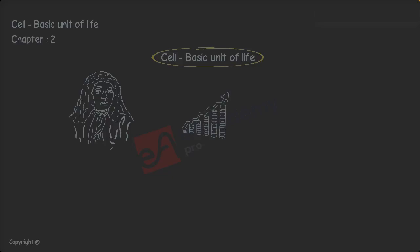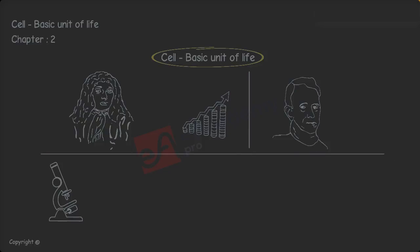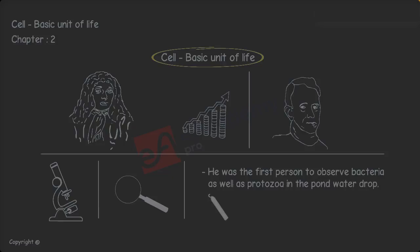He was a Dutch businessman and a contemporary of Hooke. He also used microscopes and was a physicist. He made fine quality lens for the use of monocular microscope and was the first person to observe bacteria as well as protozoa in the pond water drop. Some of the lenses could magnify objects up to 260 magnification power. We will discuss bacteria and protozoa in the upcoming classes.